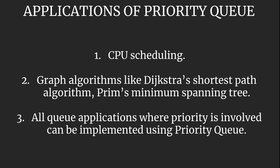Let's have a look at the applications of priority queue. We can use priority queue for CPU scheduling. It is also used in data structure and algorithm paths, like in various graph algorithms such as Dijkstra's shortest path algorithm or Prim's minimum spanning tree. And for obvious reasons, all queue applications where priority is involved can make use of priority queue. So let's jump onto the coding part and see how we can implement it.